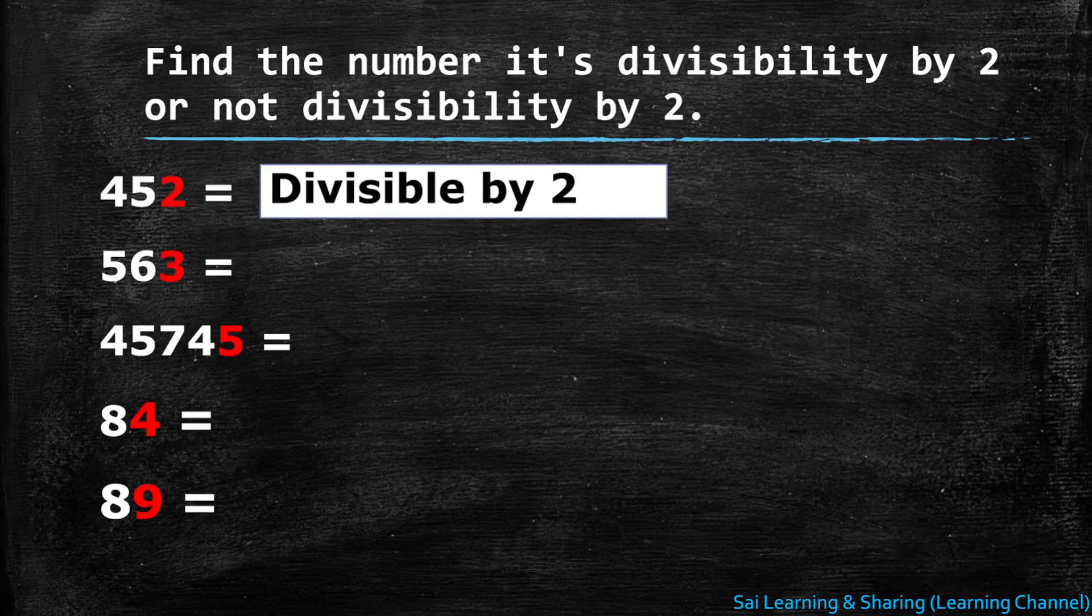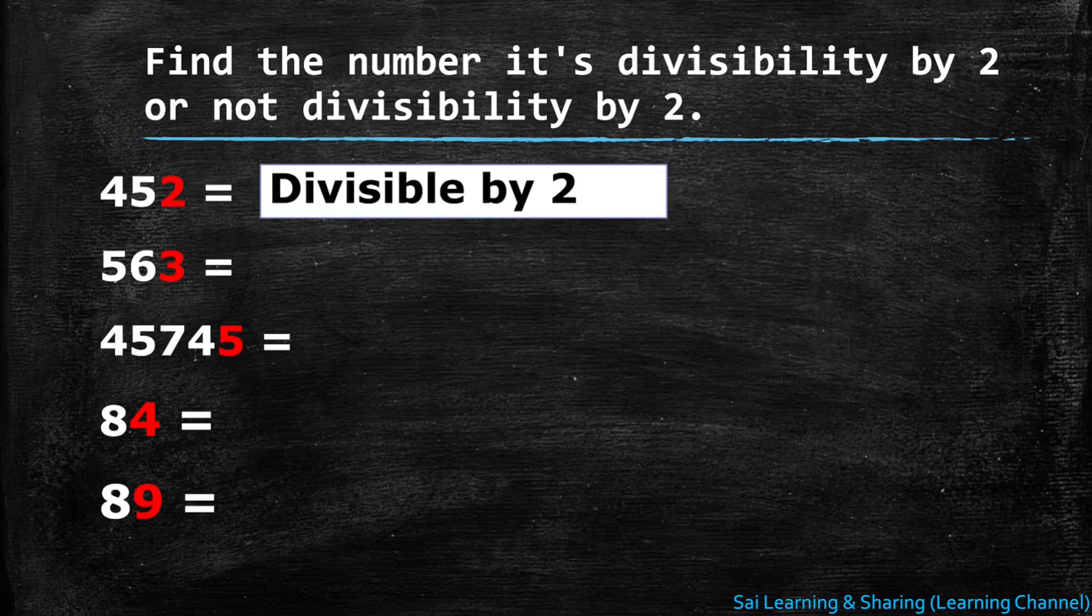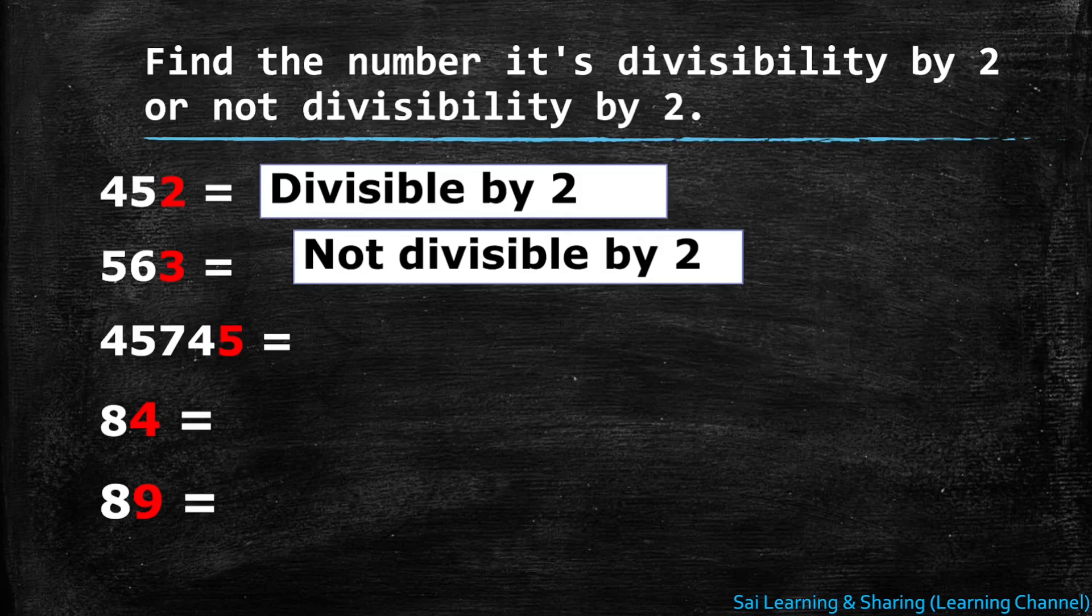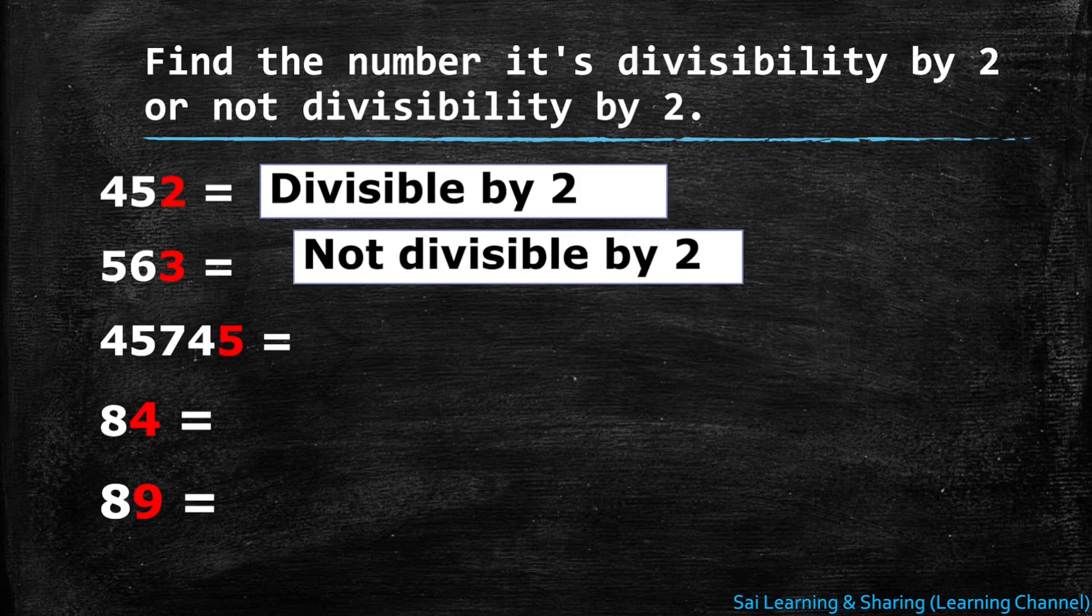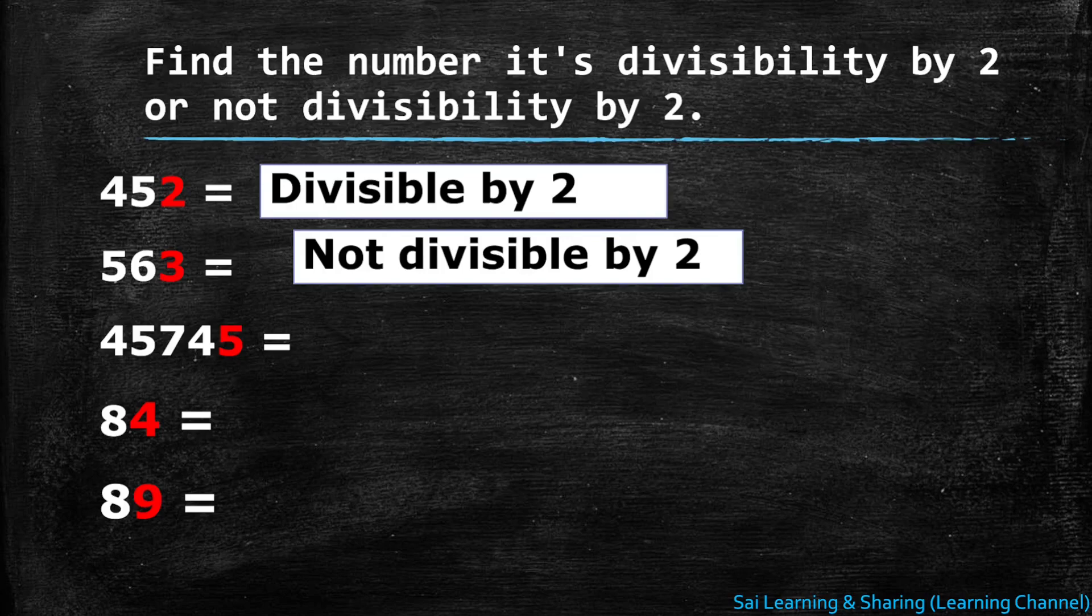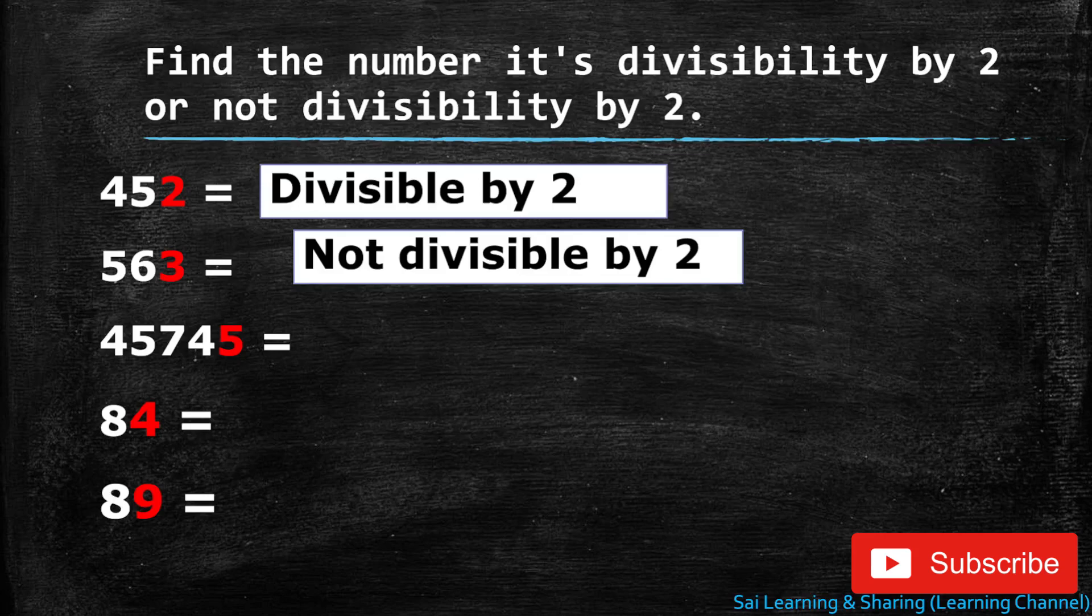Now 45745 - in the one's place it is written 5. Hence 5 is an odd number and not even, 45745 is not divisible by two.